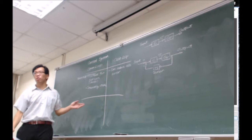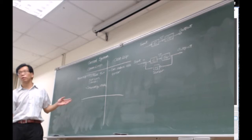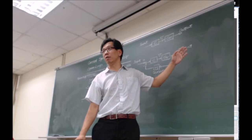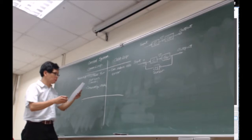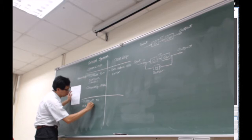Since we have advantages, certainly we also have some disadvantages or drawbacks. What is the drawback of open loop control? Obviously, I don't know anything about the output. Which means if I have some error, I cannot do anything about it. It is difficult to achieve precise control.